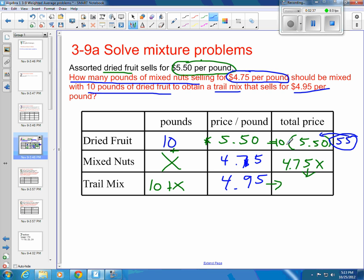If I take 55 pounds of dried fruit and 4.75X pounds of mixed nuts, I should get my total trail mix. That's going to be 55 plus my 4.75X. That's going to be equal to whatever my trail mix is.